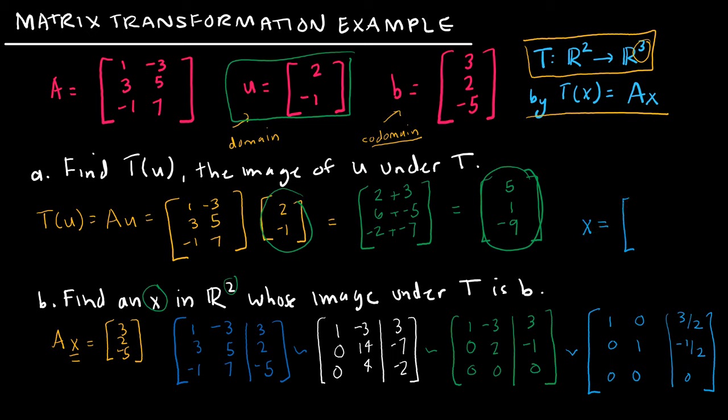Here's a practice problem for you to try on your own. We have a square at the bottom with coordinates (0,0), (0,2), (2,0), and (2,2). I'd like you to transform that figure under the function T, where T(x) is defined as A times x, with A given. Please press pause and try this on your own. When done, press play to see how you did. All I'm going to do is take each of the points — (0,0), (0,2), (2,2), and (2,0) — and multiply them by A to find the new transformed coordinates.